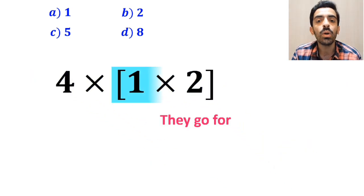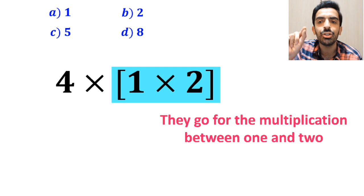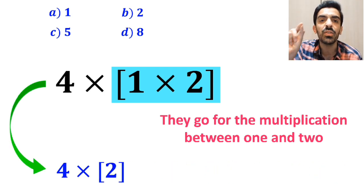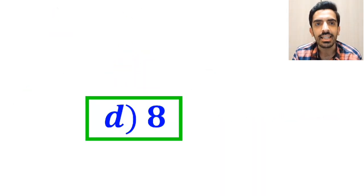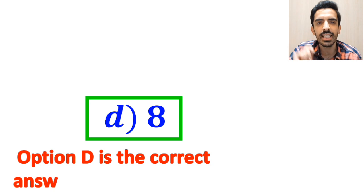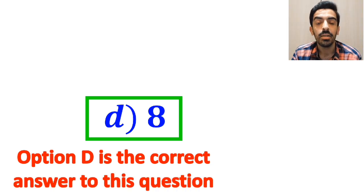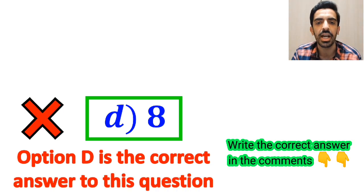And the final step, they go for the multiplication between 1 and 2, and replace this expression with 4 times 2, which eventually gives them the answer 8. And without any hesitation, they quickly say that option D is the correct answer to this question. But it's not the correct answer to this question.